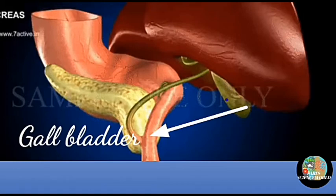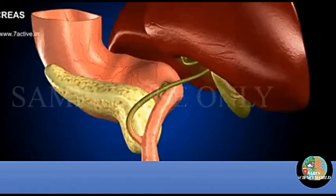The liver secretes bile juice, which is stored in the gallbladder. It helps in fat digestion. Bile helps in the emulsification of fat.